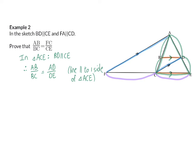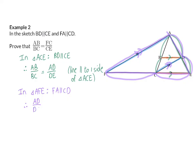Now focusing on the ratio AD over DE, we recognize that it also appears in the bigger triangle AFE. In that triangle, FA is parallel to CD — that is, parallel to DE. So in triangle AFE, FA is parallel to CD, and therefore AD over DE equals FC over CE. The reason: line parallel to one side of the triangle.